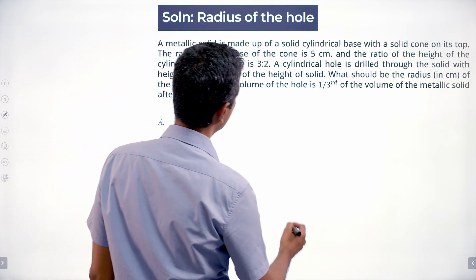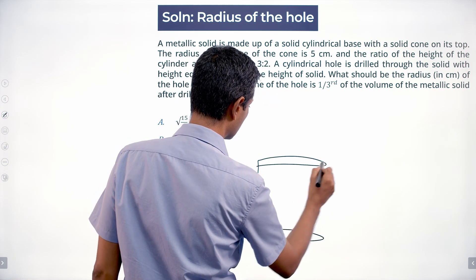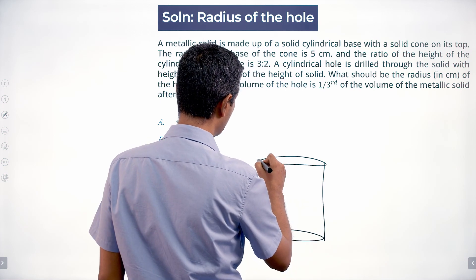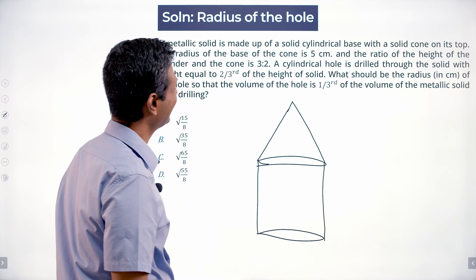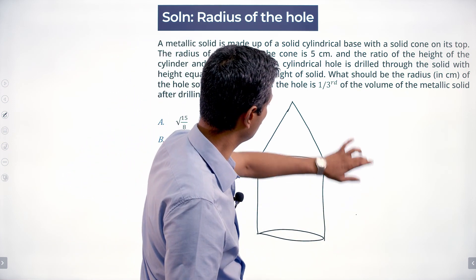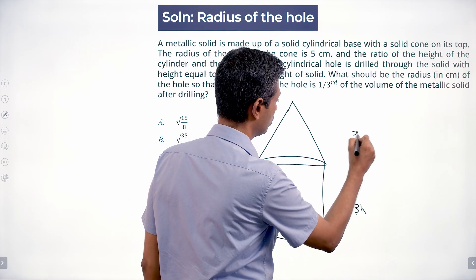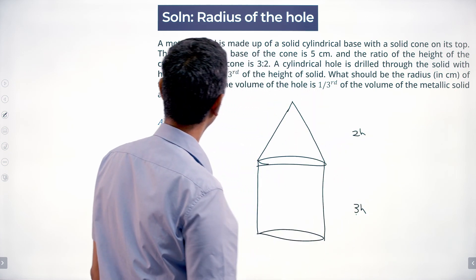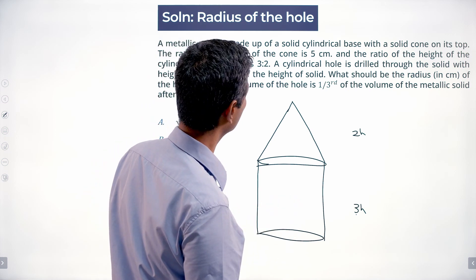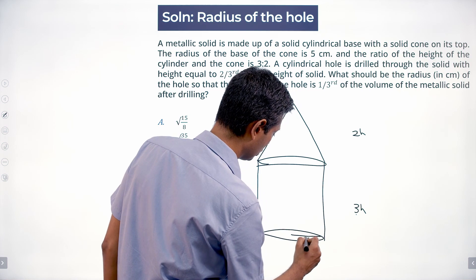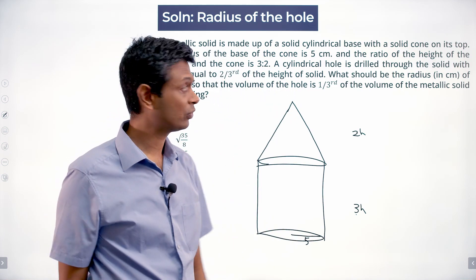So there is a cylinder on top of which sits a cone. The ratio of the heights is 3 to 2, so we label them 3h and 2h. The radius is 5 centimeters. We can find the volume of the cylinder and the volume of the cone — the whole thing.